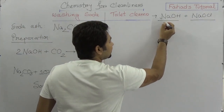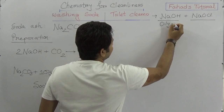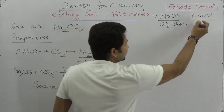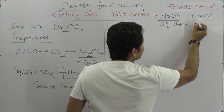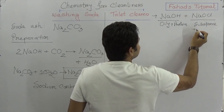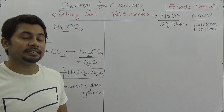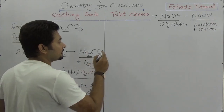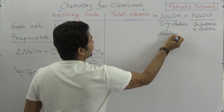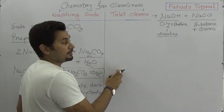Sodium hydroxide works on the oily materials and some protein materials. Sodium hypochlorite works on substances and some sort of germs. The main function: sodium hydroxide has alkaline properties and for that it cleans. Sodium hypochlorite has other functions as well.